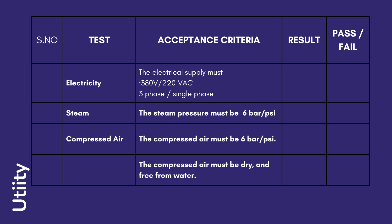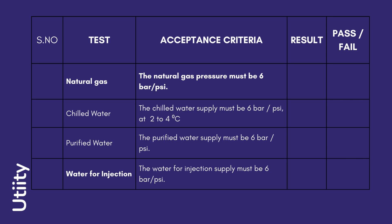Additionally, the compressed air must be dry and free from water or moisture. Natural gas — the natural gas pressure must be 6 bar or psi. Chilled water — the chilled water supply must be 6 bar or psi at 2 to 4 degrees centigrade. Purified water — the purified water supply must be 6 bar or psi. Water for injection — the water for injection supply must be 6 bar or psi.